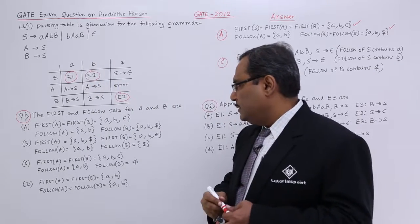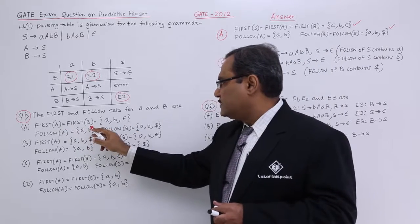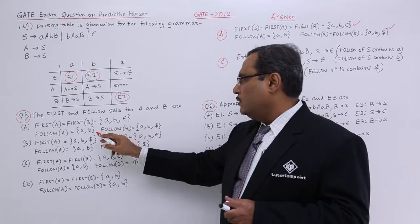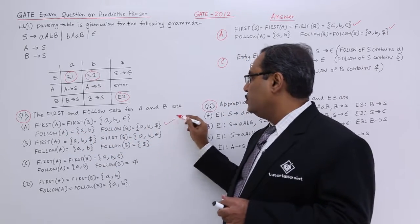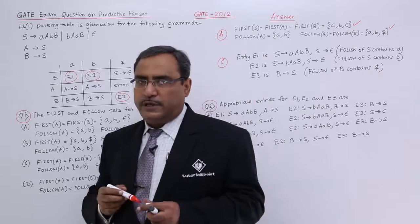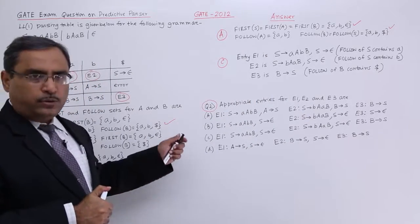In that case, we are getting option A. First A and first B they are equal A, B, epsilon and follow of A will be A, B and follow of B will be A, B dollar. Option A has got selected. Now, let us come to the linked question number 2.